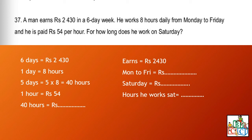Calculate his earnings from Monday to Friday. Since for the six-day week he earns 2430 rupees, subtract his Monday-to-Friday earnings from 2430 to find his Saturday earnings. Then divide that Saturday amount by 54 rupees per hour, and the answer you get is the number of hours he works on Saturday.